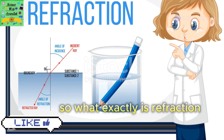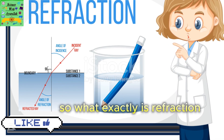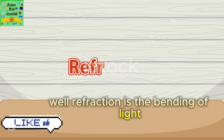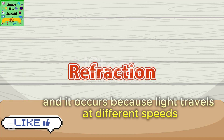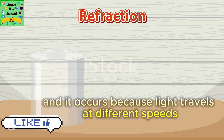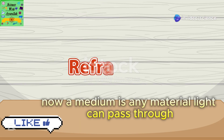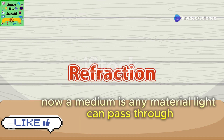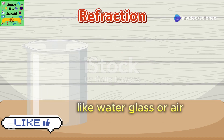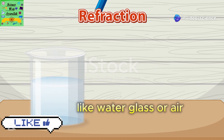So, what exactly is refraction? Well, refraction is the bending of light and it occurs because light travels at different speeds through different mediums. Now, a medium is any material light can pass through like water, glass, or air.